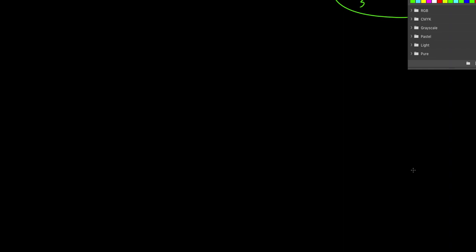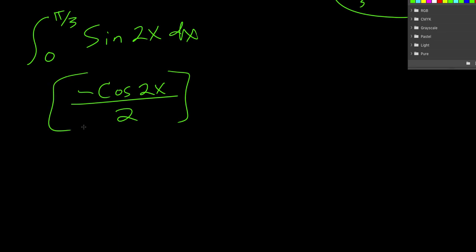Now we got another one. This time we're going from 0 to pi thirds and sine of 2x. Now, if we take the anti-derivative of sine, we get negative cosine. And then remember with the chain rule, we have to divide by the derivative of the inside. So we divide by 2.